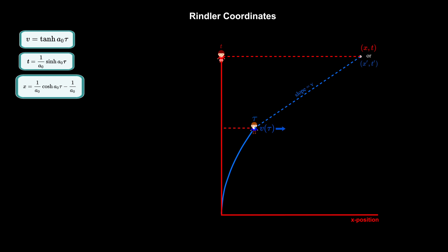I constructed this slope by first finding the tangent line at Bob's location, whose slope is 1 over v, and reflecting it in the t equals x axis.